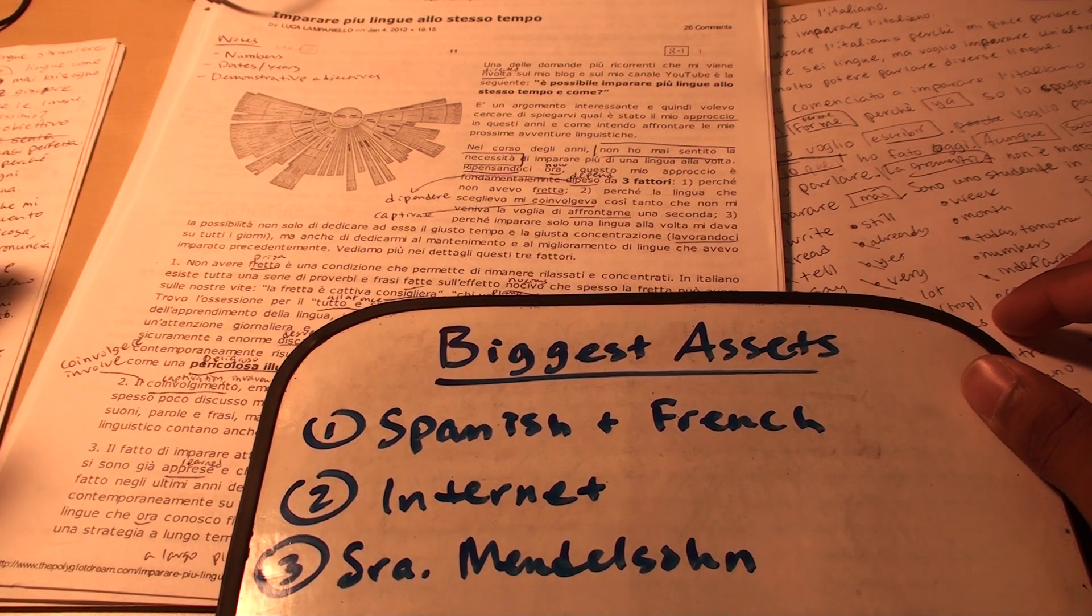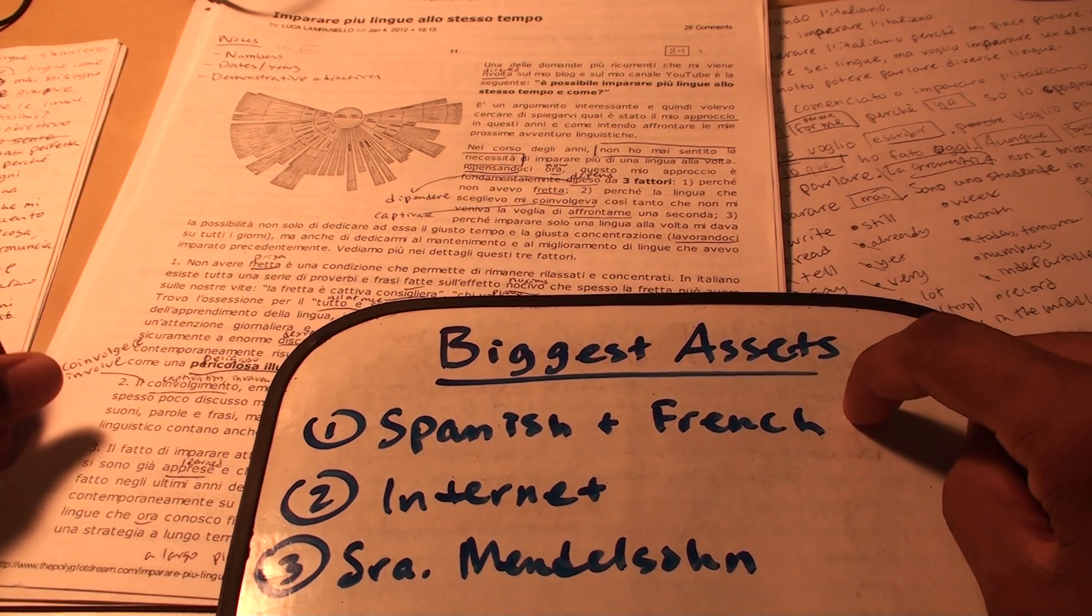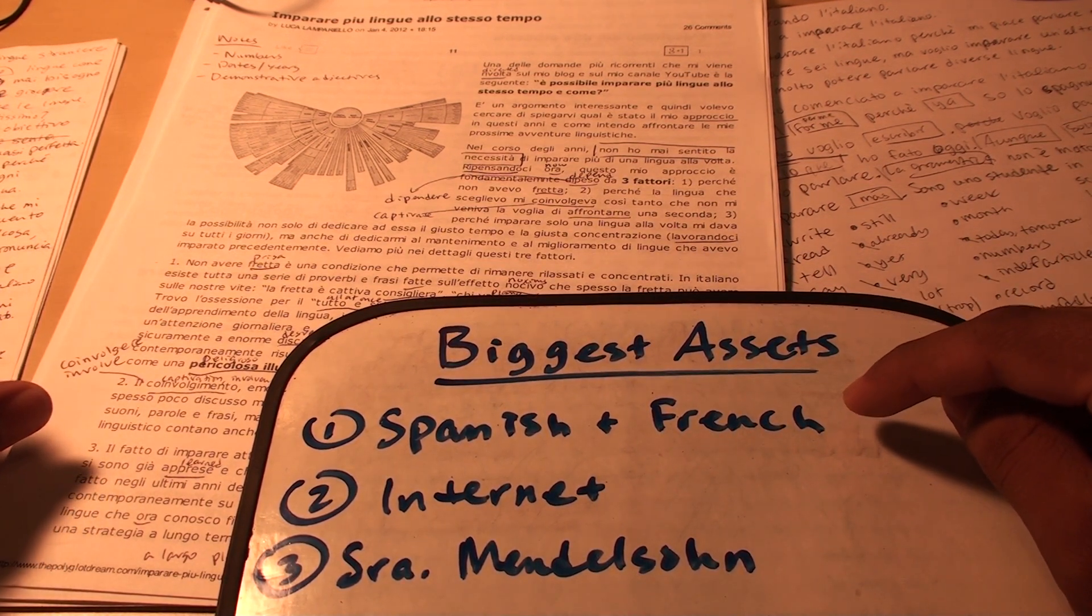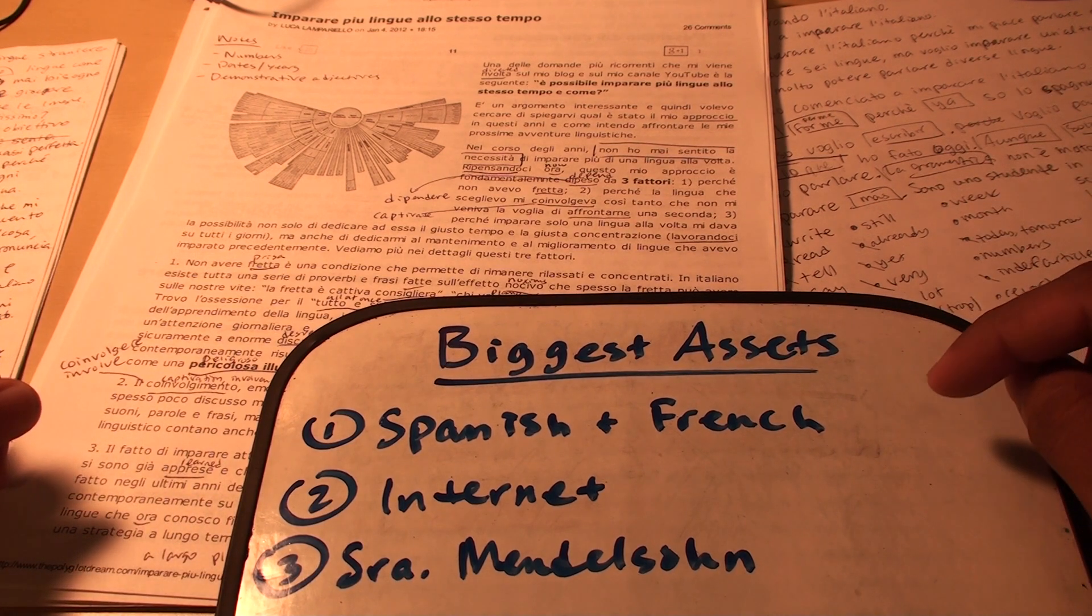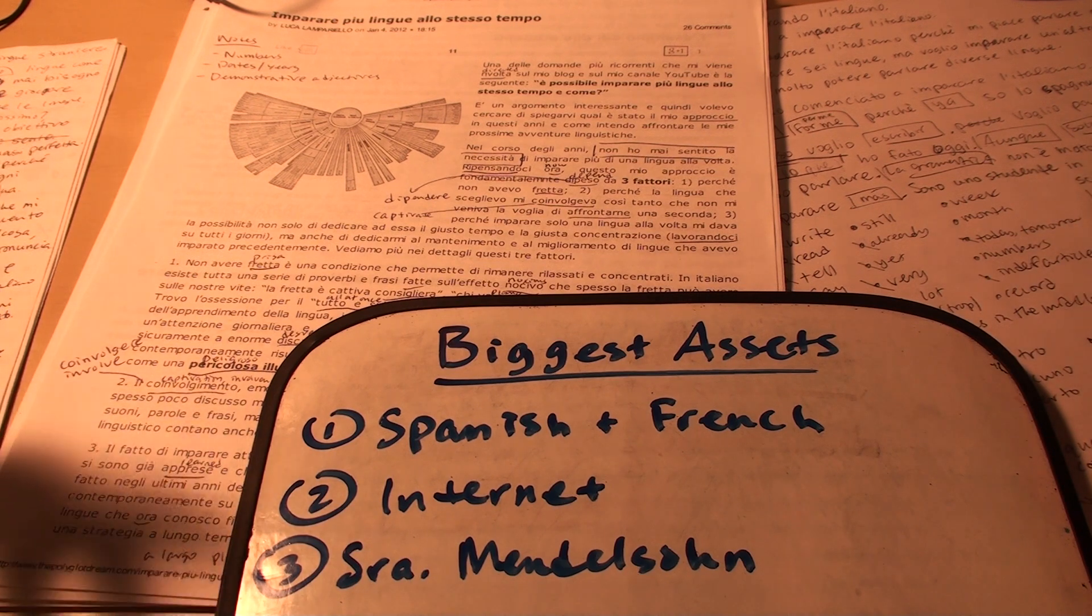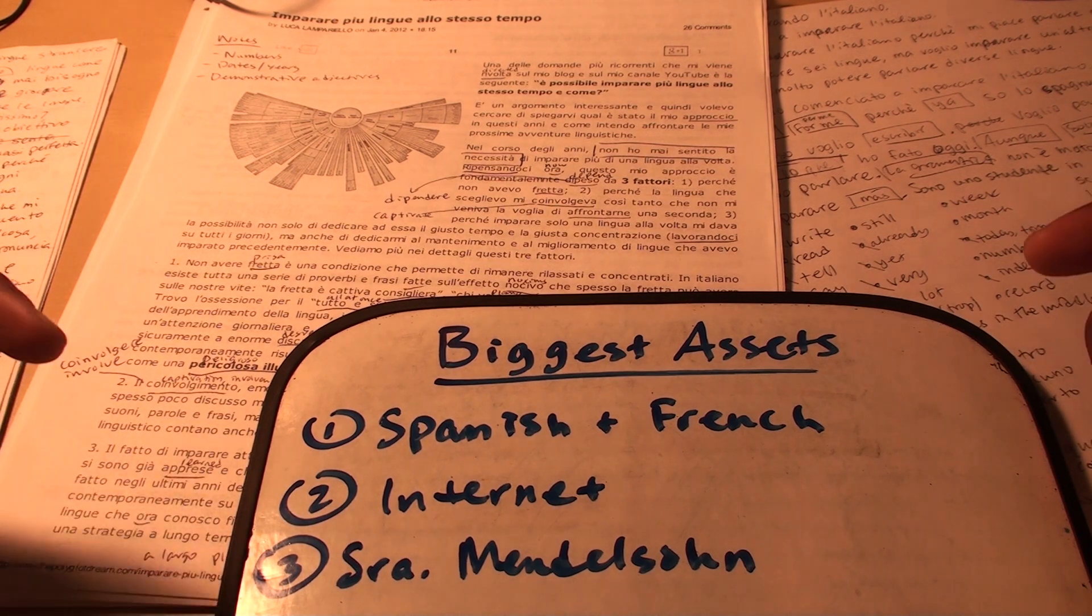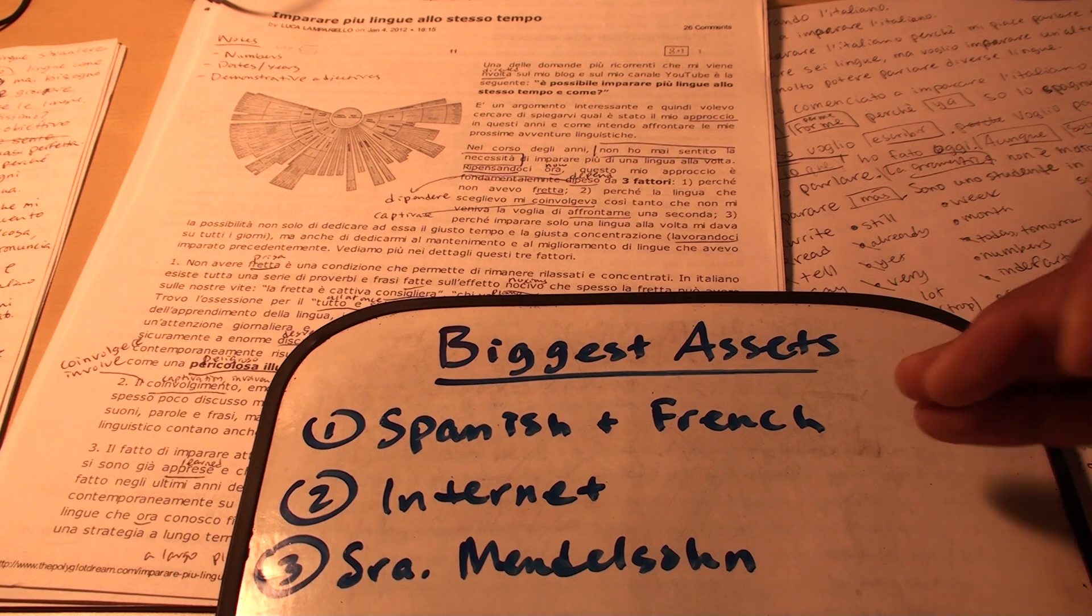So I didn't have to go through grammar explanations. I just had to learn conjugation. Also, Italian, like French, uses the verb to have as the auxiliary verb. Like in English, when we say I have a pen or I have a book, we also use the same verb to have to say I have gone, I have been to Italy, I have learned Italian, things like that. So that was natural to me.